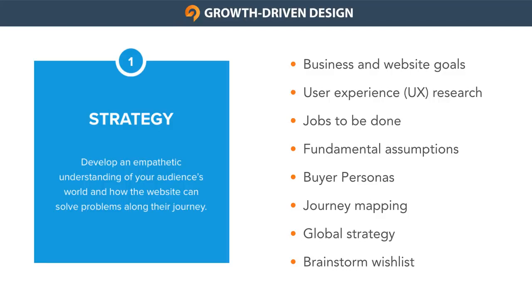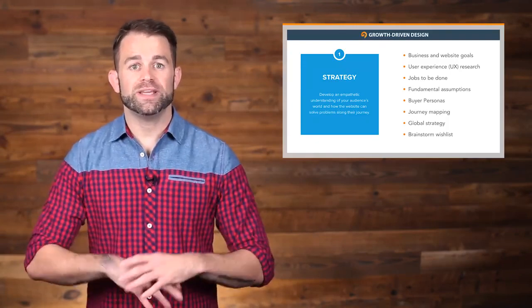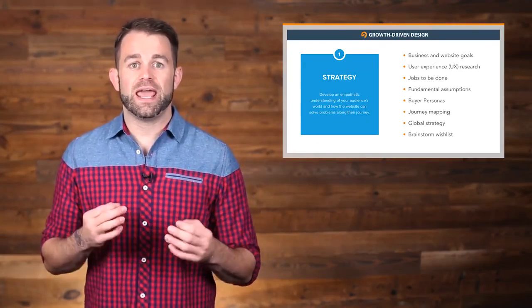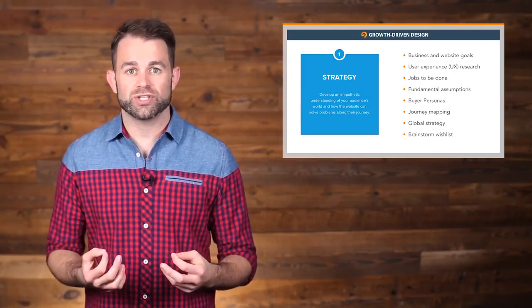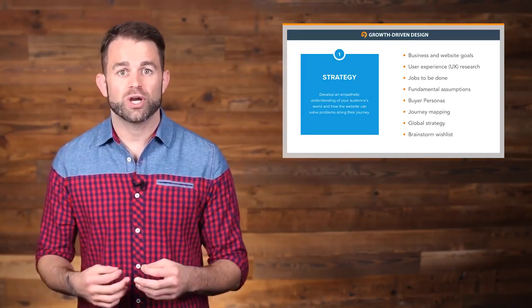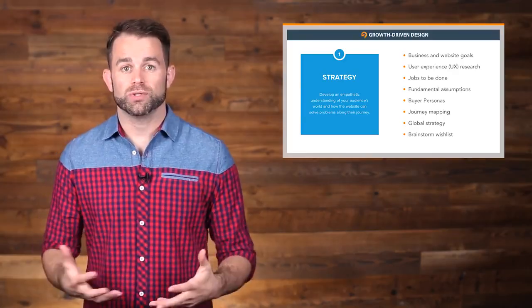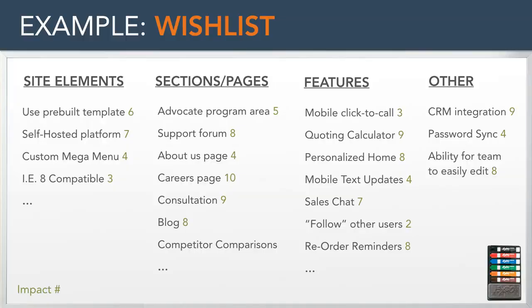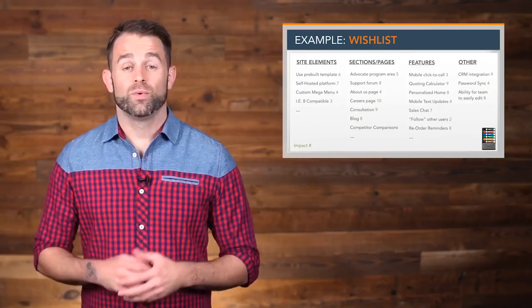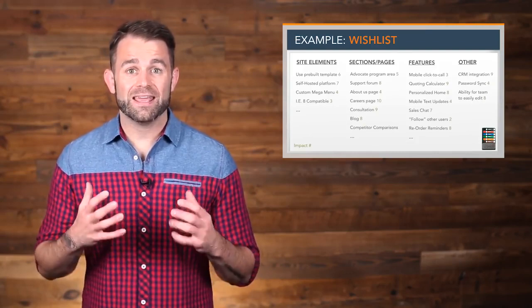The last step of the strategy stage for growth-driven design is that you brainstorm an initial wish list. This wish list will contain creative and impactful website ideas that you can aim to solve user challenges, provide value for the user, and ultimately help your business reach its goals. The website wish list will have anywhere between 75 and 200 different ideas, including site elements, sections, pages, specific features, modules, integrations, and more.